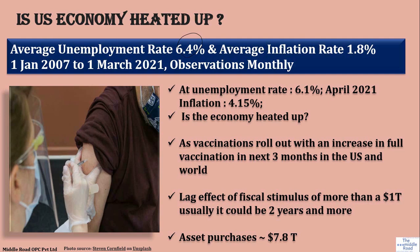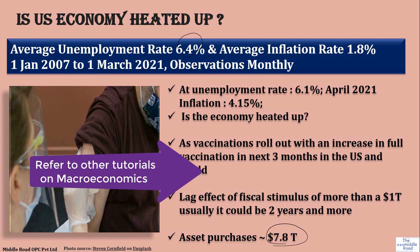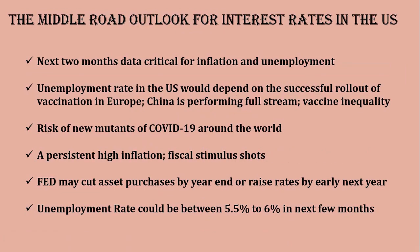We need to understand whether the economy is heating up as the vaccination rollout has been very successful. The macroeconomic data should also be much better. Asset purchases by the Fed have been about 7.8 percent, and usually there is a lag of two years for inflation to appear. Looking at the projections, the data for inflation and employment rate over the next two months is very critical. If there is persistently high inflation and unemployment falls with a successful vaccine rollout in the US and Europe, the unemployment rate could come down to between 5.5 and 6 percent. The natural rate of unemployment in the US has been perceived to be between 5 and 6 percent, though the Fed at one point discussed 4.4 percent, and these are widely debated estimates.